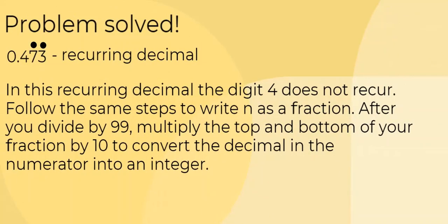In this recurring decimal, the digit 4 does not recur. Follow the same steps to write n as a fraction. After you divide by 99, multiply the top and bottom of your fraction by 10 to convert the decimal in the numerator into an integer.